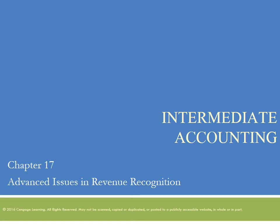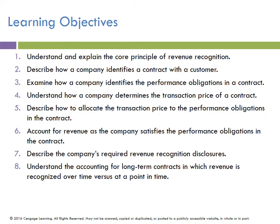Chapter 17 will be looking at advanced issues in revenue recognition. The specific learning objectives are: we'll look at how we understand and explain the core principle of revenue recognition, how a company identifies a contract with a customer, what's a performance obligation, how a company determines a transaction price of a contract, how to allocate that transaction price to the performance obligations, and how we'll account for the revenue once all those items are identified. The final area of the chapter will be looking at long-term contracts and how we recognize revenue related to those types of transactions.